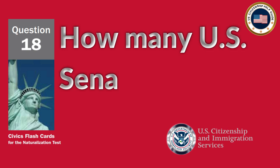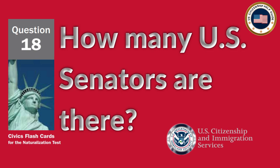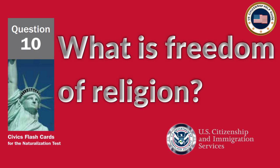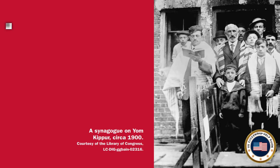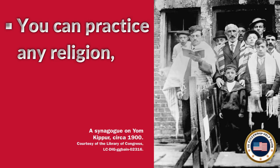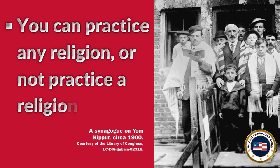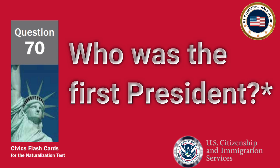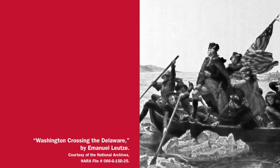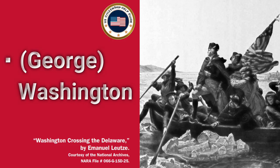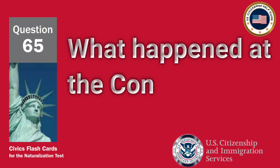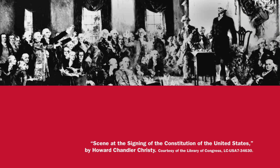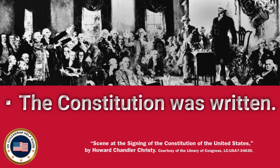How many U.S. senators are there? 100. What is freedom of religion? You can practice any religion or not practice a religion. Who was the first president? George Washington. What happened at the Constitutional Convention? The Constitution was written.